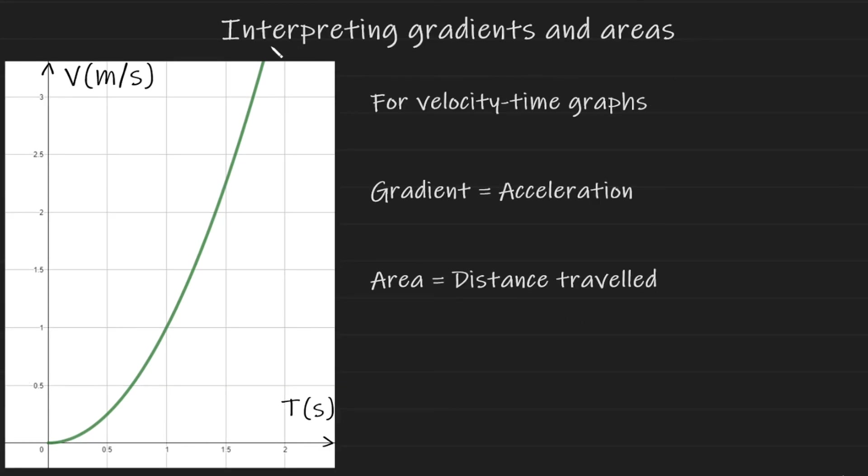Okay, now for a velocity time graph, the gradient at any point will be the acceleration of the object that this graph is referring to. The area between the graph and the x-axis or in this case the time axis will be the distance traveled by this object. So if you calculate the area between 0.5 and 1.5, you would get the total distance traveled by this object in that time frame. And on another note about velocity time graphs, if you have an increasing gradient like this in a velocity time graph, that means your acceleration is increasing over time.